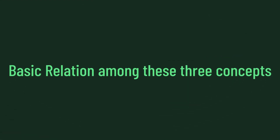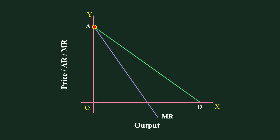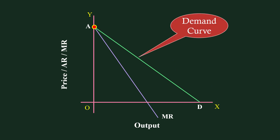The first part begins. We are going to make use of a graph. Look at this graph — MR is the Marginal Revenue Curve, AR is the Average Revenue Curve, which is also the Demand Curve. I sincerely believe that you know how to measure Elasticity of Demand at a point on a straight-line linear demand curve.